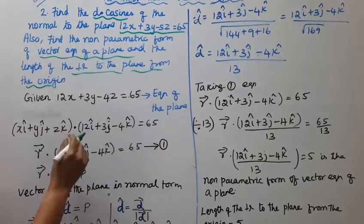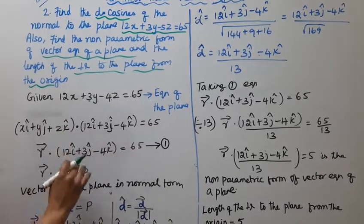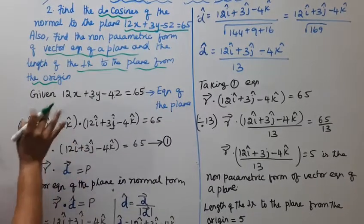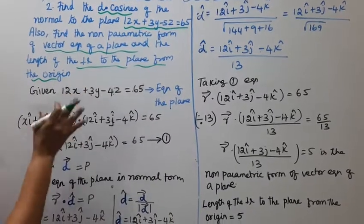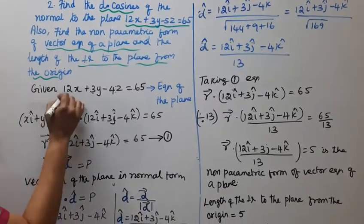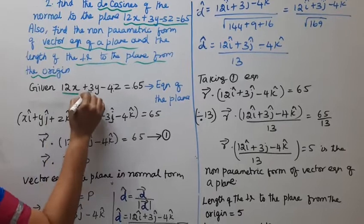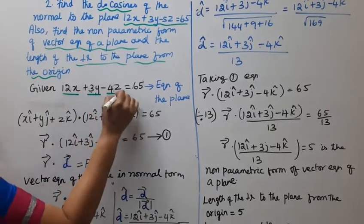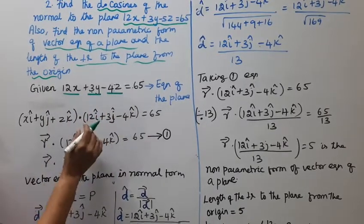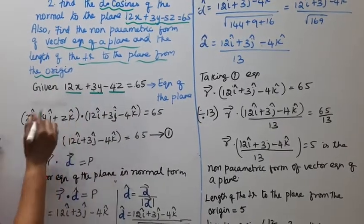This is the normal form. We have the normal form. Now, 12x plus 3y minus 4z is equal to 65.